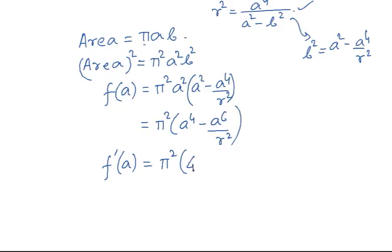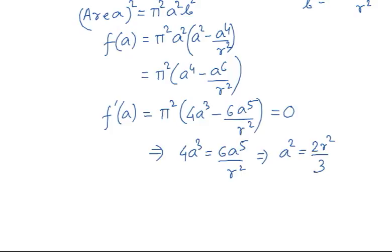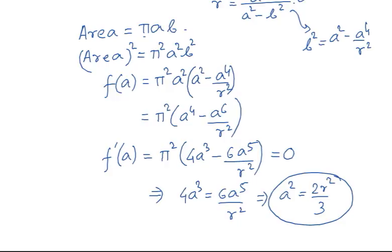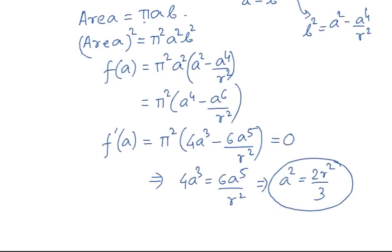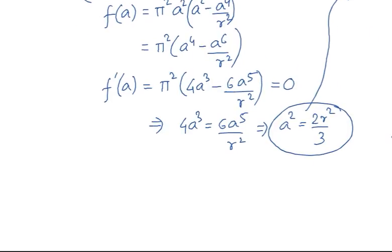Differentiating F(A) with respect to A: F'(A) = π²(4A³ − 6A⁵/R²). Setting F'(A) = 0 gives 4A³ = 6A⁵/R², which simplifies to A² = 2R²/3. At this value of A², the area function is maximum.